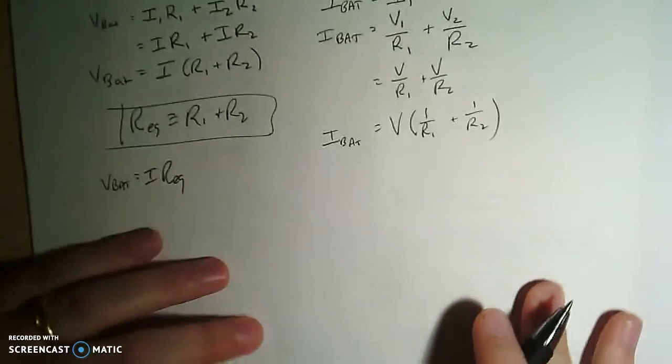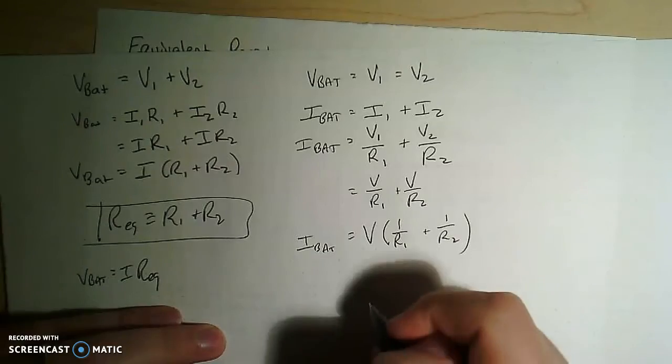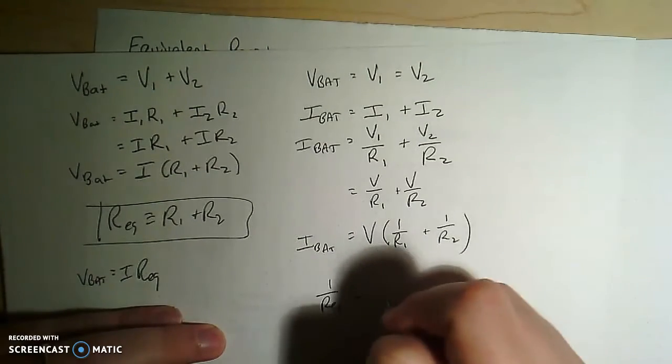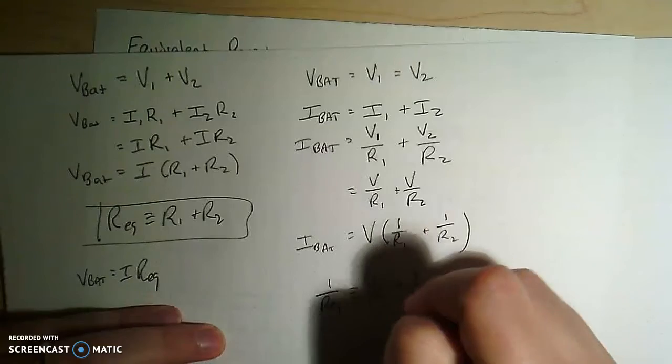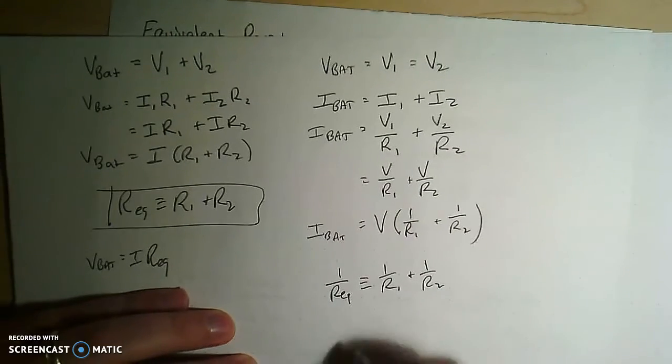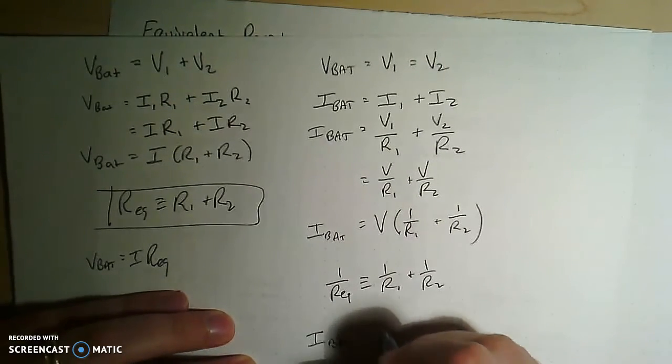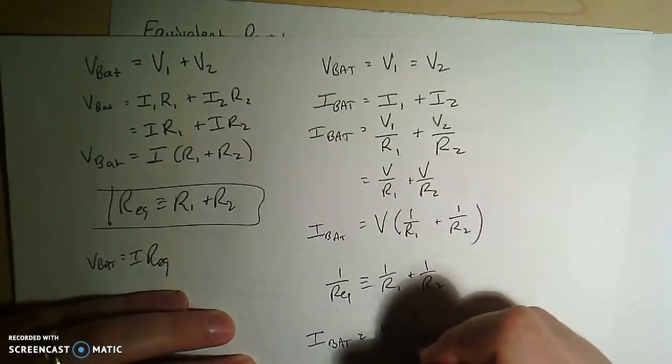So just continuing this thought, you kind of see where this is going. You can say that if I define 1 over the equivalent resistance as 1 over R1 plus 1 over R2, then I should be able to say that the current through the battery is equal to V times 1 over REQ.